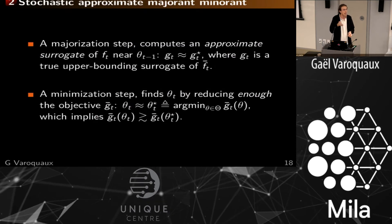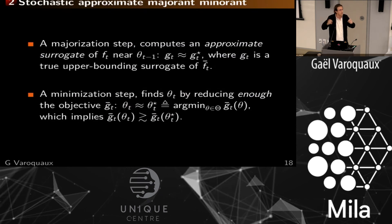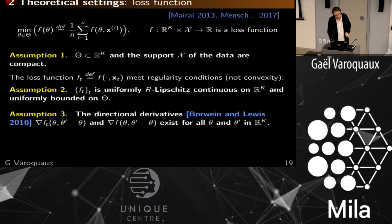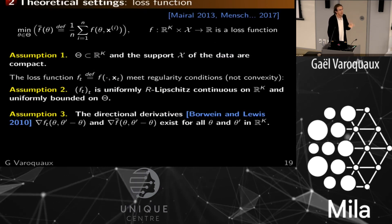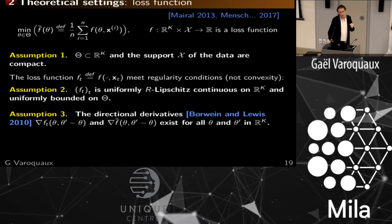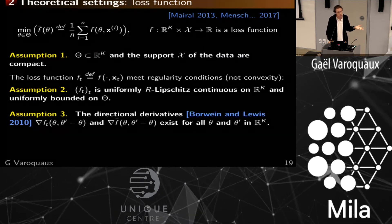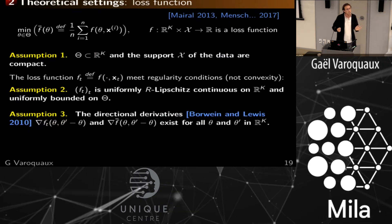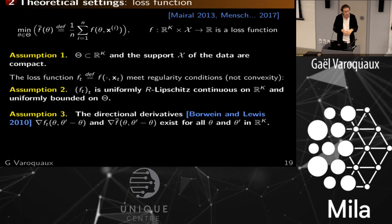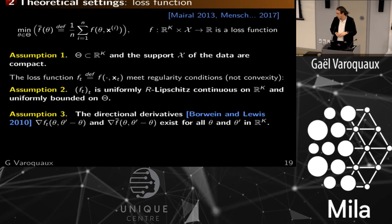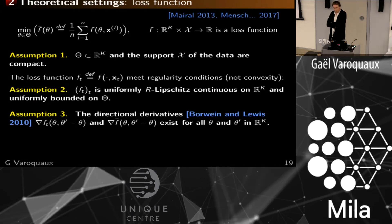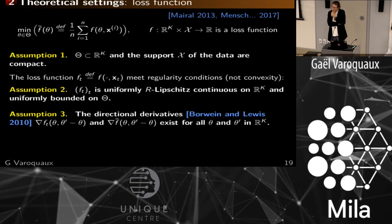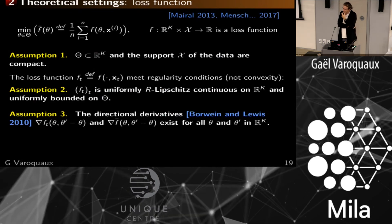So really the idea: you've got two steps. One is a majorization step that computes an approximate surrogate of the loss function close to your previous weights. This approximate surrogate is close to a true upper-bounding surrogate — that's the first thing. The second is you take an approximate minimum using any minimization algorithm you want — block coordinate descent, gradient descent, anything — and you can stop early. I went through the paper and looked at the assumptions on the loss function: classic assumptions like things are reasonably well bounded, they don't need to be convex, they're reasonably Lipschitz, and some form of derivative exists.